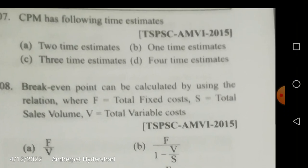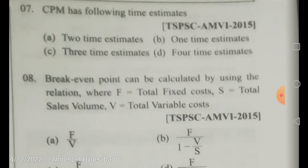Regarding time estimates: PERT has three time estimates, but CPM has only one time estimate.